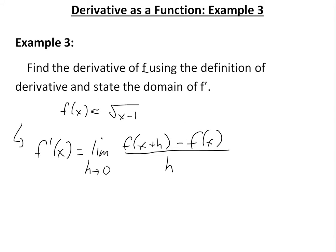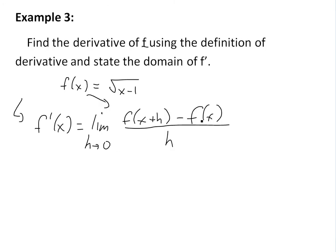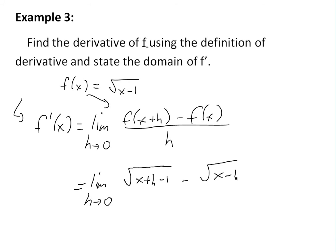To find the derivative, all we do is plug in x plus h into f. So we write: limit as h approaches 0 of square root of x plus h minus 1, minus square root of x minus 1, all divided by h.